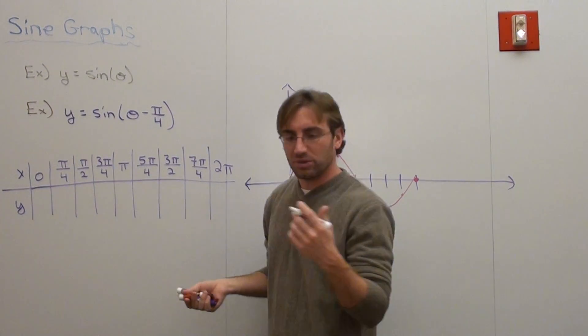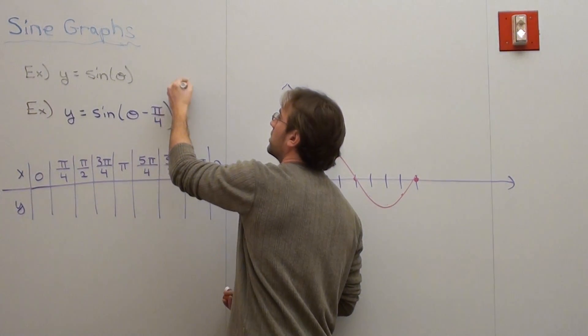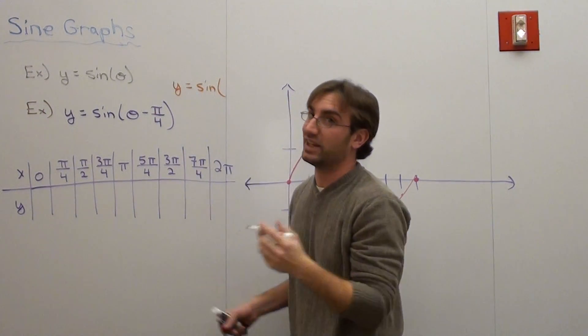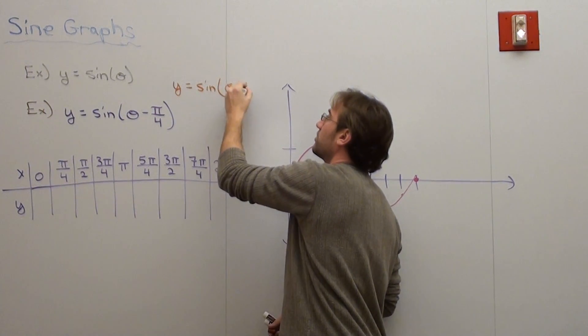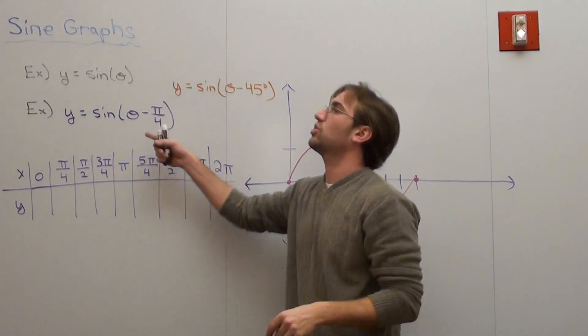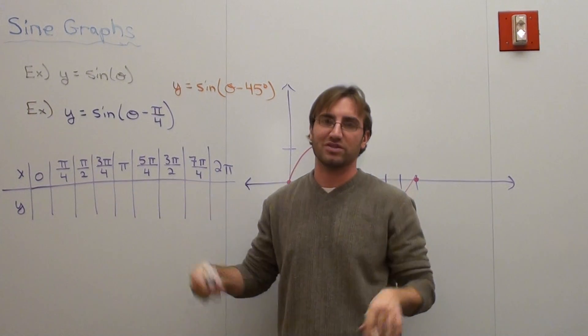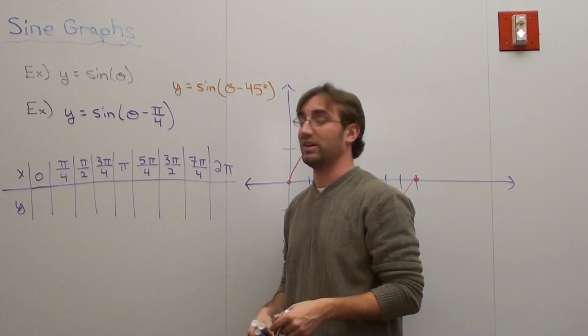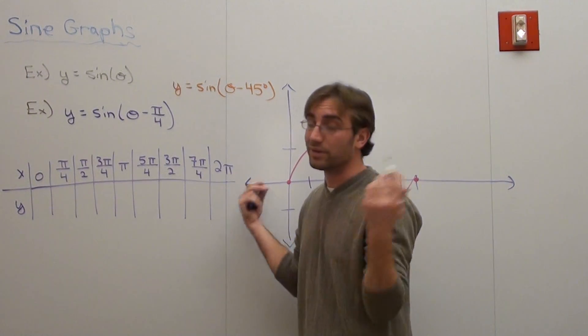Basically what it is, is a degree minus 45 degrees. If you want it to be easier, it's y equals sine of theta minus 45 degrees. So every degree measure you have, just subtract 45 degrees by it. I chose 45 degrees because I was using increments of 45, and I can figure that out in my head. I don't want to use a calculator if I don't have to.